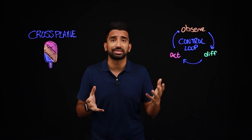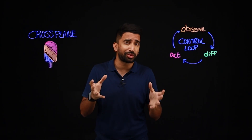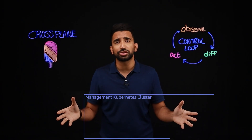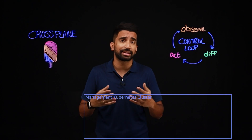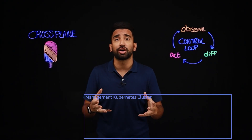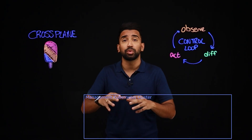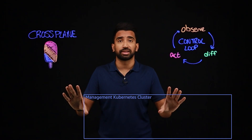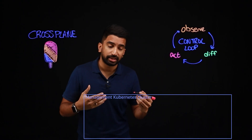Let's dive into an example. Crossplane needs to run on a Kubernetes cluster. So let's create this cluster either locally with something like kind, or create a cluster on EKS. Now, we'll consider this to be our management cluster, and we'll install Crossplane on it.